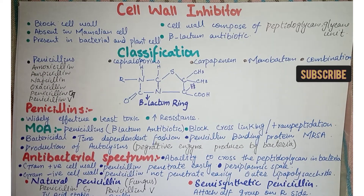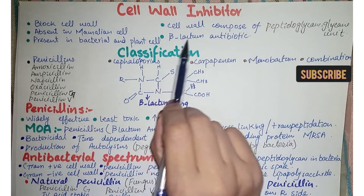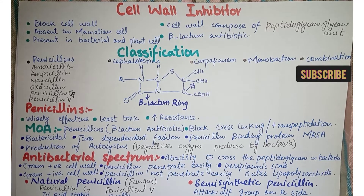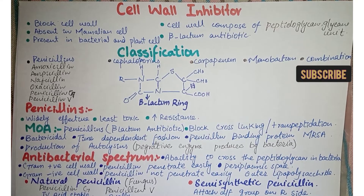Now we will discuss what specific structure of the cell wall inhibitor gives the antibiotic effect. That specific structure is the beta-lactam ring — jo ki cell wall inhibitors ke andar present hoti hai, aur iska kaam antimicrobial effect produce karna hota hai.